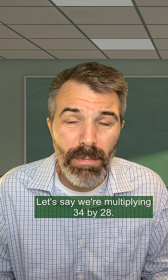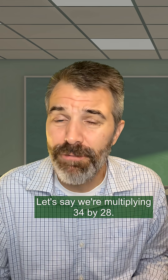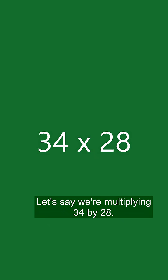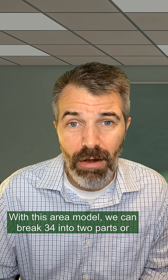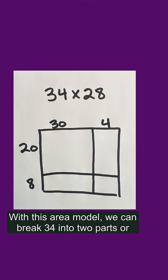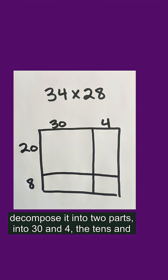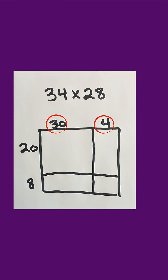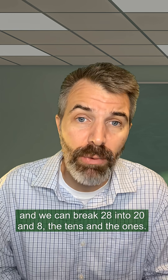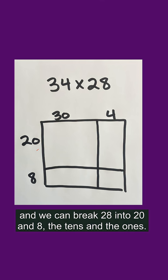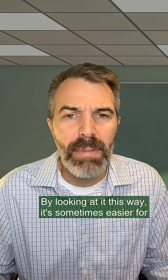Let's say we're multiplying 34 by 28. With this area model, we can break 34 into two parts — or decompose it — into 30 and 4, the tens and the ones. And we can break 28 into 20 and 8, the tens and the ones.